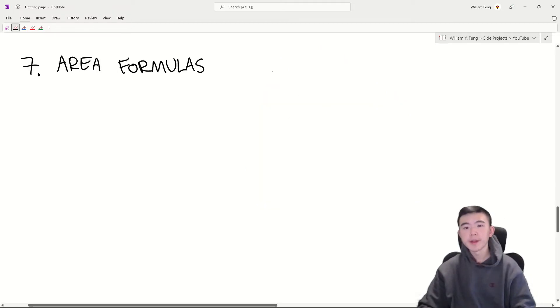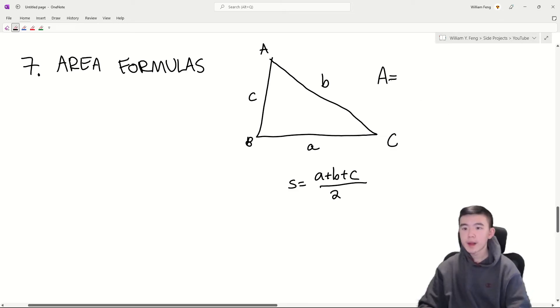Now let's get into some area formulas. First, you should be familiar with Heron's formula, which tells us that in a triangle ABC, if these are the side lengths and S is equal to the semiperimeter of the triangle, or half the perimeter, then area is equal to square root of S times S minus A times S minus B times S minus C.